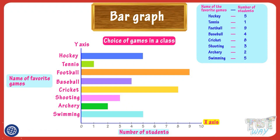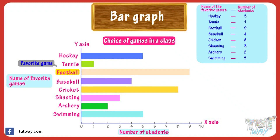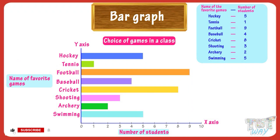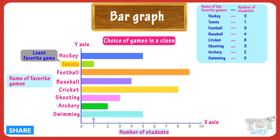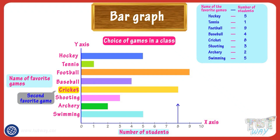Let's read the graph. The graph shows that the most favorite game of students is football, as the bar corresponding to football is the longest, with a length of 9 — meaning 9 students like football. The least favorite game is tennis, with only one student liking it the most. The second most favorite game is cricket, as 8 students like cricket the most.